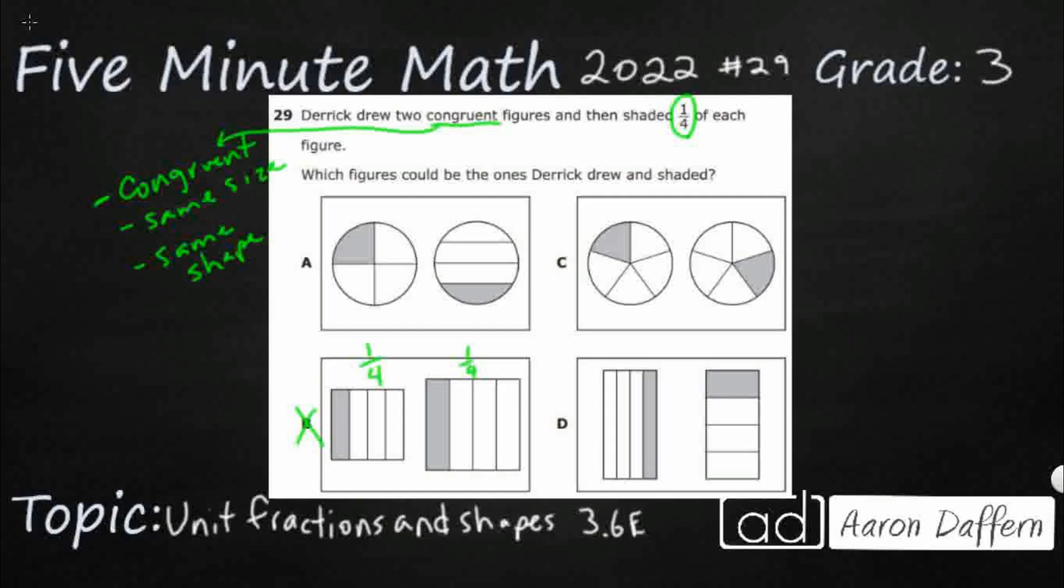The actual term for this is similar, and you will work on this when you get older into middle school. When shapes are similar, that means they're proportional. They're the same shape, but one is kind of just zoomed in or zoomed out. One is smaller or larger than the other. So we cannot choose B, because they're not congruent. Congruent literally means same size, same shape.